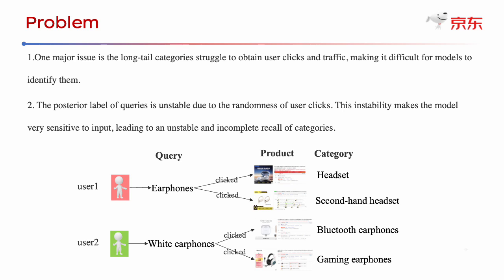However, if another user inputs a similar search query such as wired earphones, the click labels may change to Bluetooth earphones or gaming earphones. Even though the categories of headset and wired headset also offer wired earphones, they are not clicked by customers, thus not presented as the label of the query wired earphone. This instability makes the model very sensitive to the input, leading to unstable and incomplete recall categories.